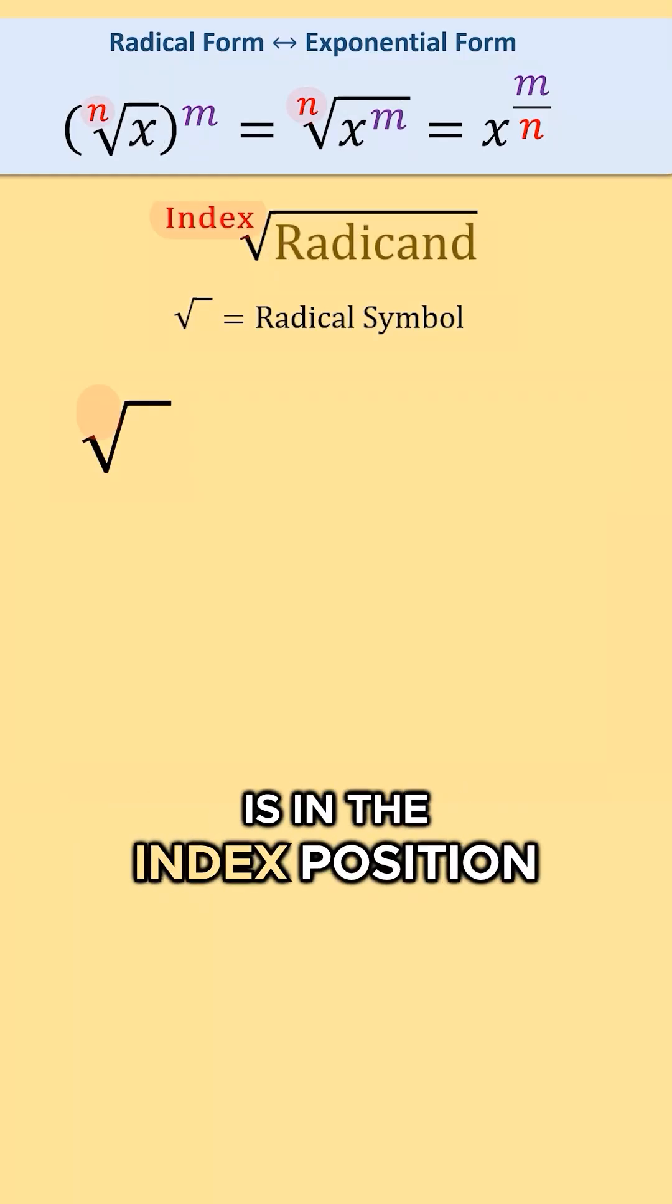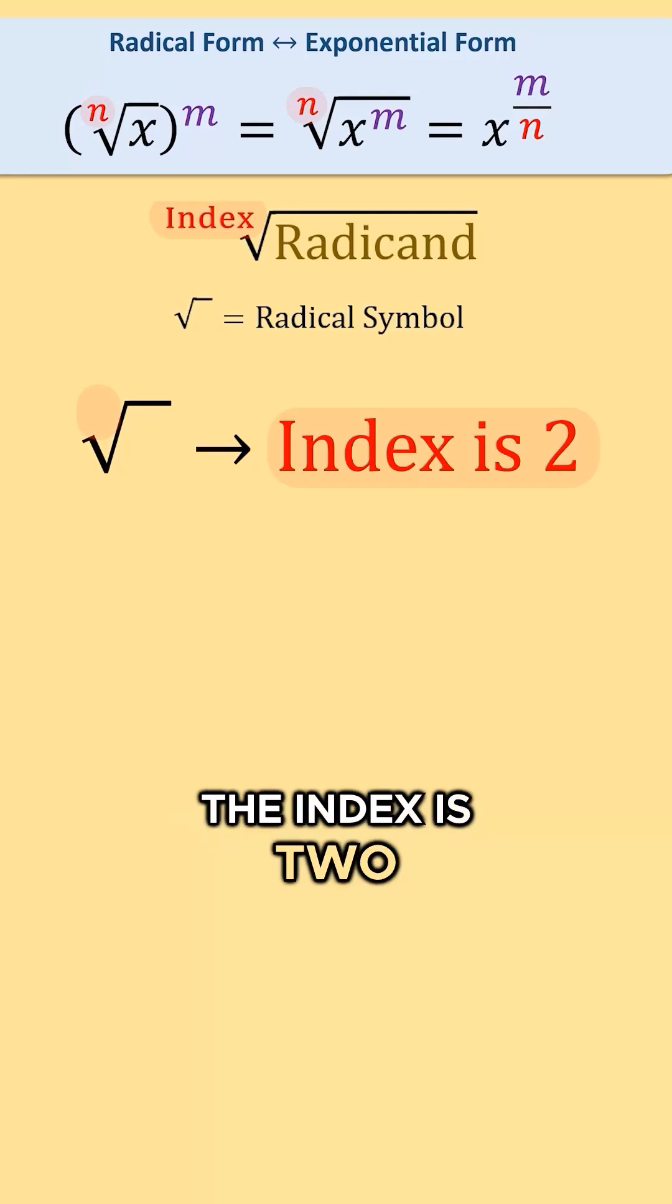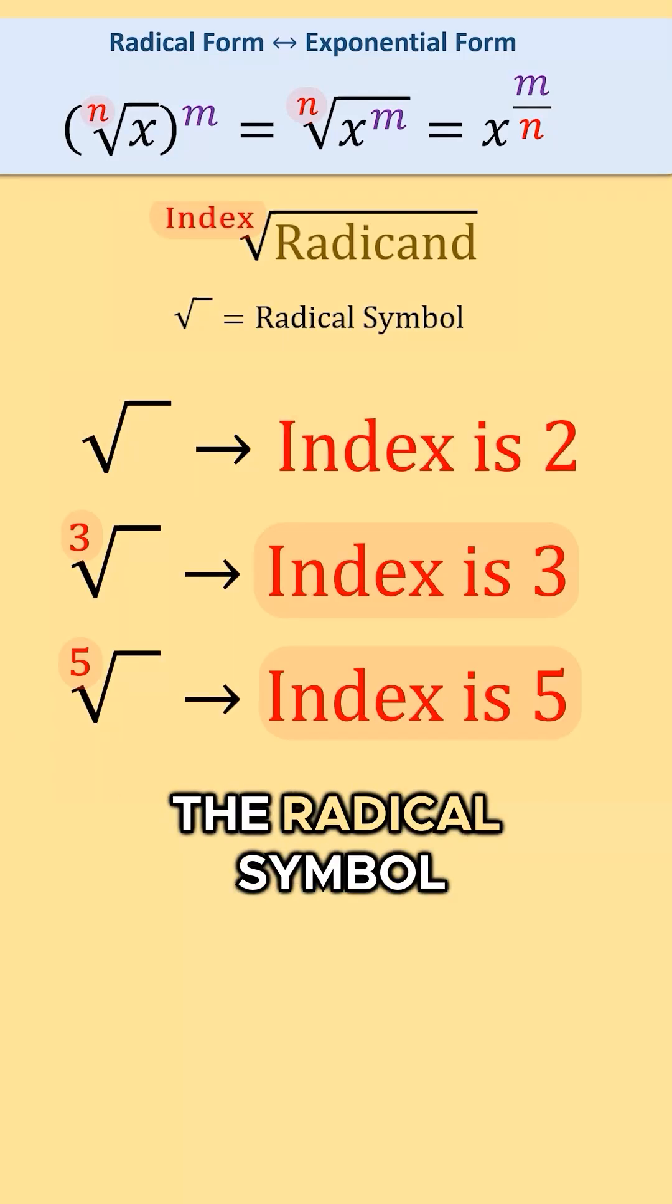When no number is in the index position, the index is two. Otherwise, the index will be the number that appears in this position of the radical symbol.